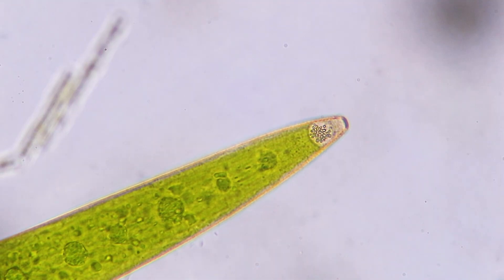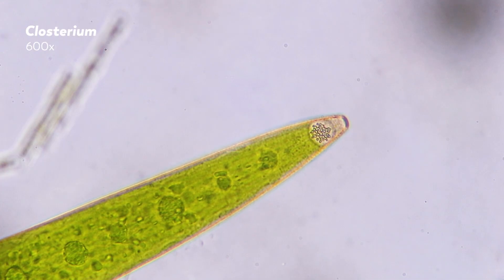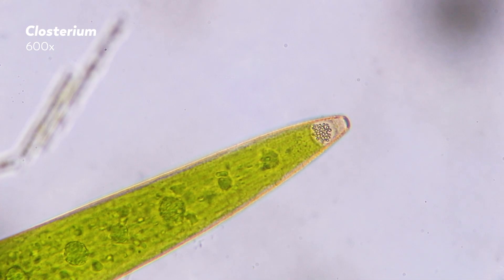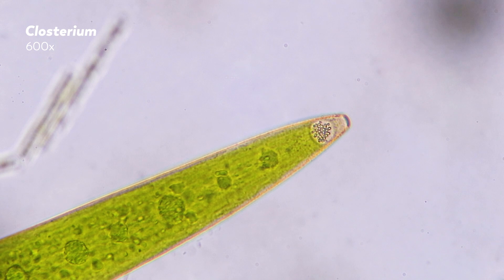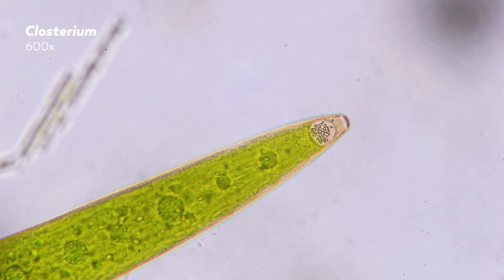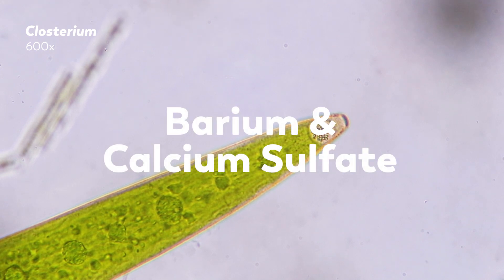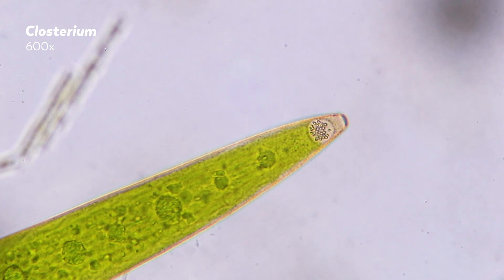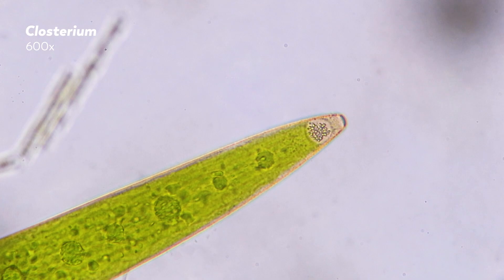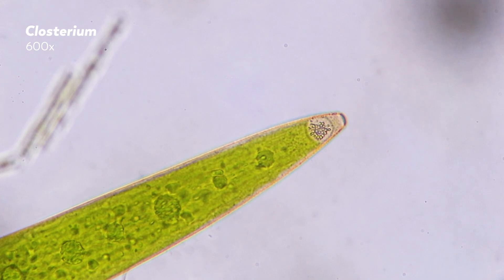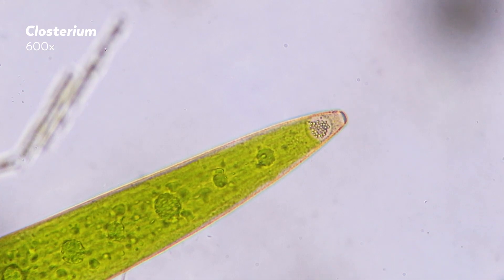This is the unicellular alga Closterium. At the very tips of these cells, there's an alluring little object — do you see that orb with the tiny round things inside? Those are actually crystals made of barium and calcium sulfate, but why are they there? Well, no one knows yet. And we hope — nay, we know — someone will someday solve this mystery. But for now, it is yet another thing that we do not know about our universe.